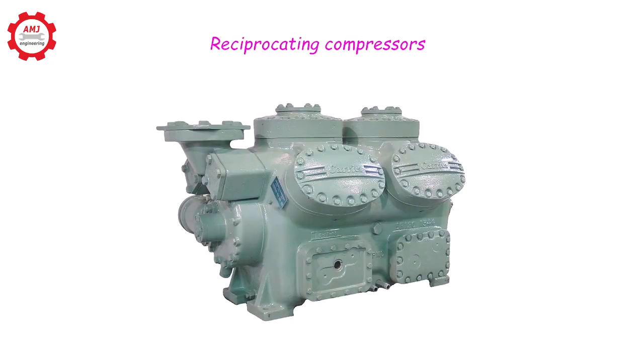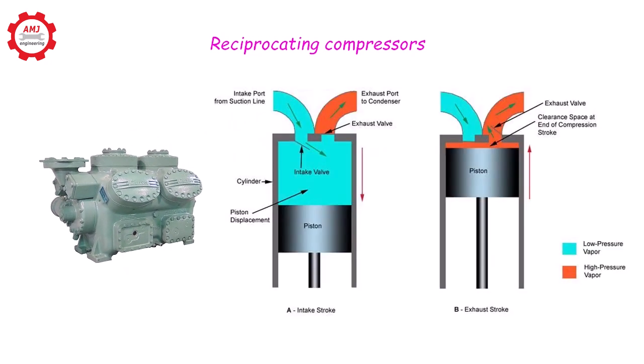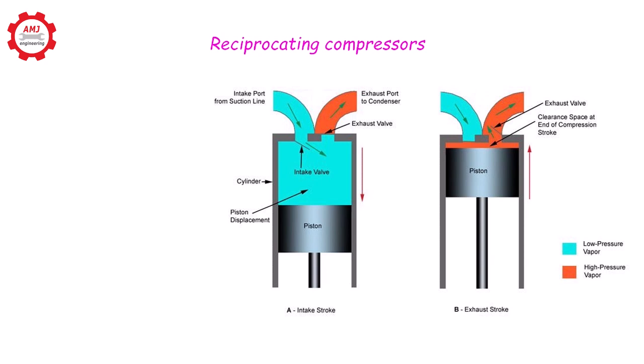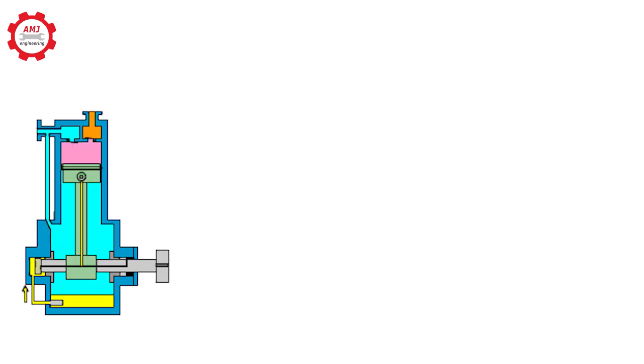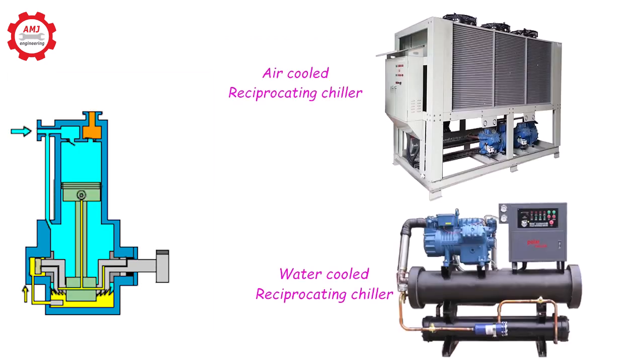Reciprocating compressors operate similar to a car engine; they use a piston driven from a crankshaft. The refrigerant is drawn into the cylinder during the downstroke and compressed in the upstroke. These compressors could be found on air-cooled and water-cooled chillers up to 200 tons of refrigeration.